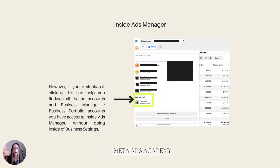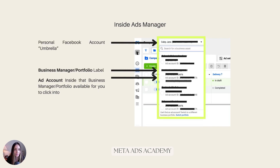This is a place where Meta is grouping together all the assets that your personal Facebook account has access to. When we click on that, you can see all of the ad accounts that you have access to. So if you're ever stuck wondering where the ad account you want is, sometimes if you click in here you can see it in a list like this. At the top is your personal Facebook account label — the umbrella — and underneath are all the different ad accounts you have access to, grouped by which Business Manager or Business Portfolio account owns them.